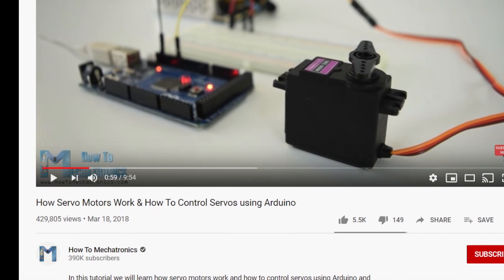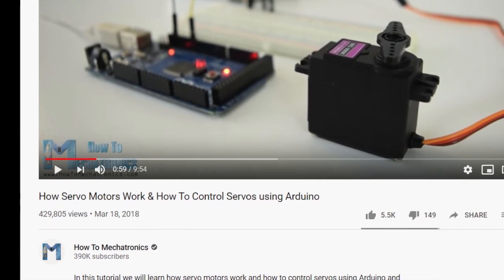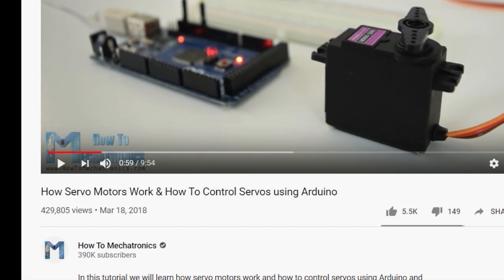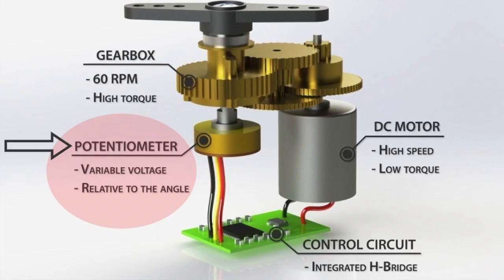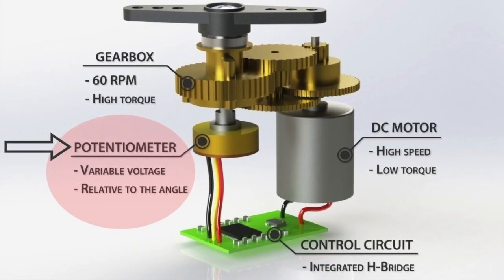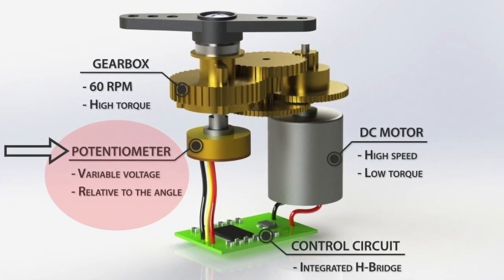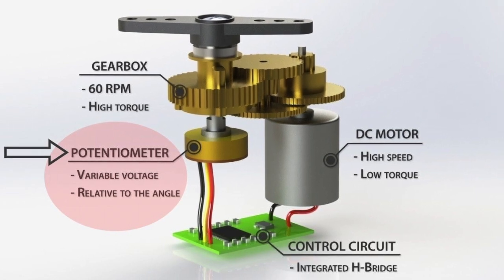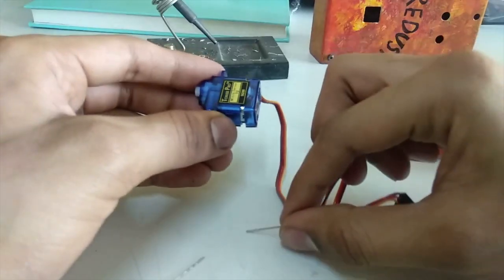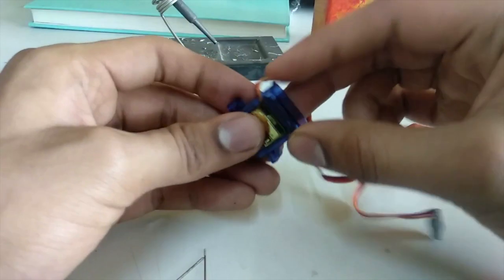Now if you want to understand the servo's working principle, How To Mechatronics has a really cool video about the same. But for now, what you need to know is that a servo uses an internal potentiometer to keep track of its current position, and for us to know the servo's position, all we have to do is read that potentiometer's value.